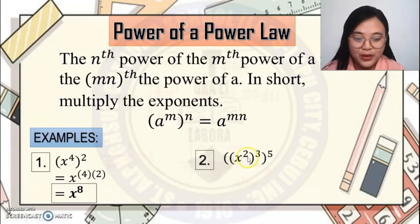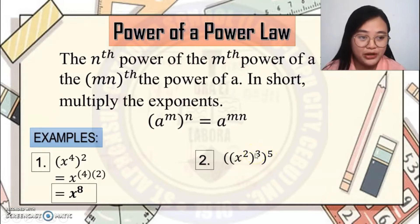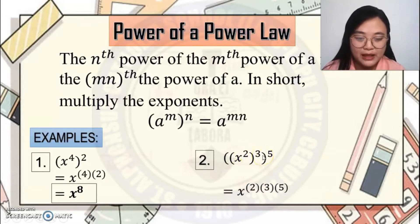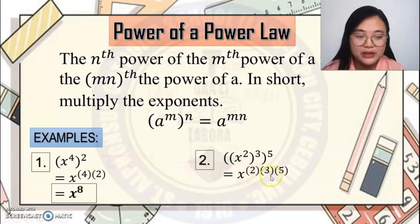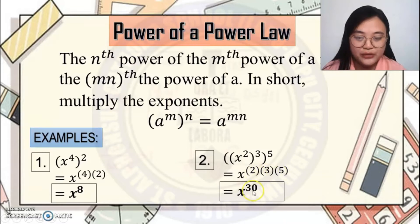Second example: x squared, raised to the cube, raised to 5. Same procedure — multiply all the exponents: x raised to 2 times 3 times 5. Since 2 times 3 times 5 is 30, the final answer is x to the power of 30.